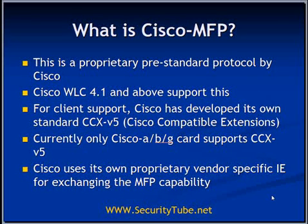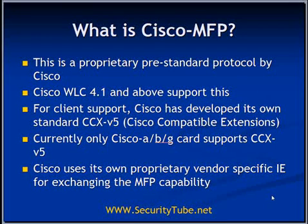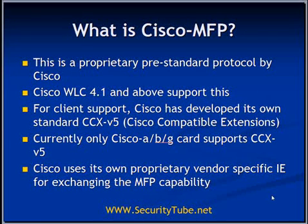Without discussing Cisco MFP, the discussion about MFP or the 11w draft cannot be complete. Cisco MFP is a proprietary pre-standard implementation by Cisco, supported by Cisco's WLC or Wireless LAN Controller version 4.1 and all above versions. For client support, Cisco has developed its own standard CCX V5, or Cisco Compatible Extension version 5. Any client which is CCX V5 will support the Cisco MFP protocol. Currently, only the Cisco ABG client is a CCX V5 client. Cisco uses its own proprietary vendor-specific information element for exchanging MFP capabilities, and as the standard gets ratified, Cisco will need to migrate to the RSN standard implementation.